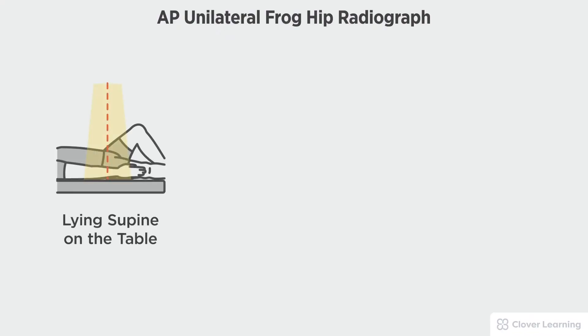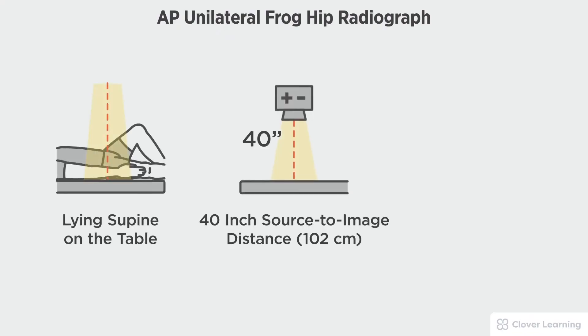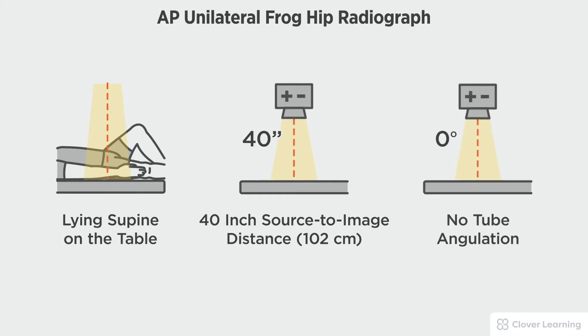In this view we will be demonstrating an AP unilateral frog hip. The AP unilateral frog hip should be performed with the patient lying supine on the table with a 40 inch source to image distance and no tube angulation.